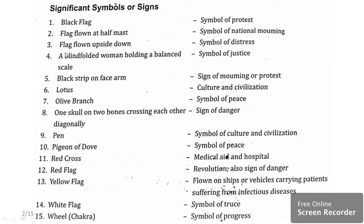A flag flown upside down is a symbol of distress. A blindfolded woman holding a balanced scale indicates a symbol of justice. A black strip on the face or arm directly indicates a sign of mourning or protest.